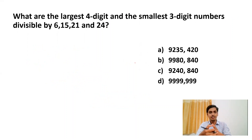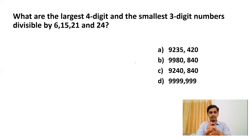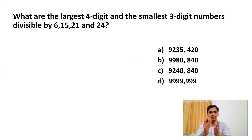Next question: What are the largest four-digit and smallest three-digit numbers divisible by 6, 15, 21, and 24? We need to find which largest four-digit number and which smallest three-digit number can be divided by all four of these numbers. The answer purely lies in finding the LCM of these numbers.